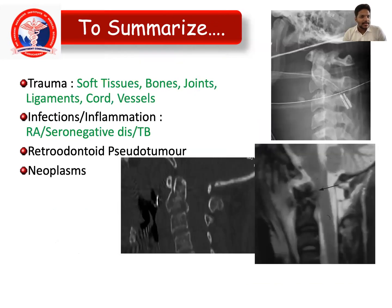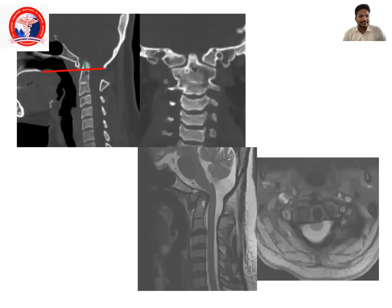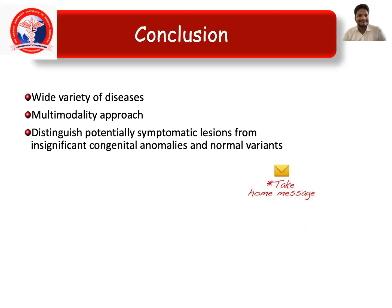To summarize, traumatic causes involve soft tissues, bones, joints, ligaments, cord, and vessels. Infections such as rheumatoid arthritis, tuberculosis, and seronegative arthritis, as well as retro-odontoid pseudotumors and neoplasms, are key categories. A wide variety of diseases are seen in CVJ, and a multimodality approach is always needed to distinguish potentially symptomatic lesions from insignificant congenital anomalies and normal variants.